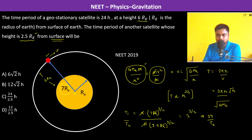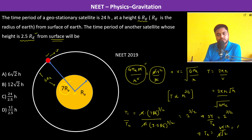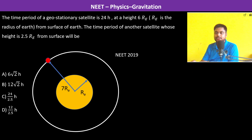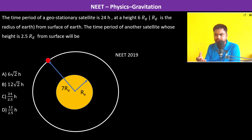Therefore T2 equals 24 divided by 2^(3/2), which is 24 divided by 2√2, giving 12/√2, which equals 6√2 hours.